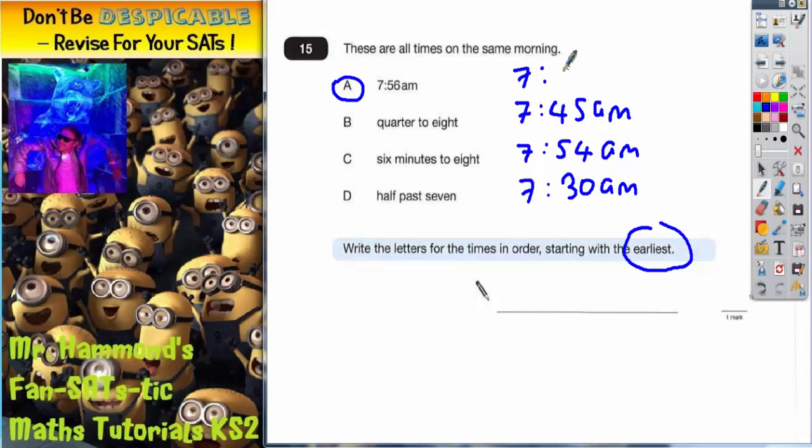Now it's really simple, but obviously we can't forget this 7:56. I'm just going to write it there so we've got all the times laid out. So starting with the earliest, the earliest time is going to be... they all begin with seven o'clock, so then we're just looking at the minutes.